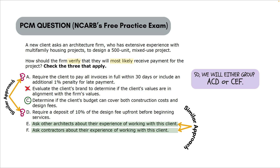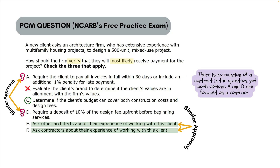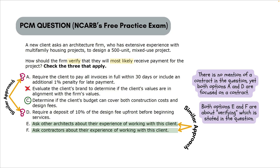So we're deciding between the group ACD or CEF. My biggest issue is there's no mention of a contract in the question, yet both Options A and D are focused on contract terms. On the other hand, Options E and F are about verifying — which is stated directly in the question. That's why I believe the correct options are C, E, and F.